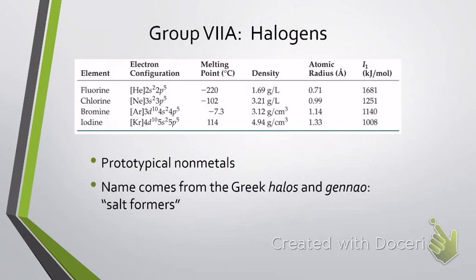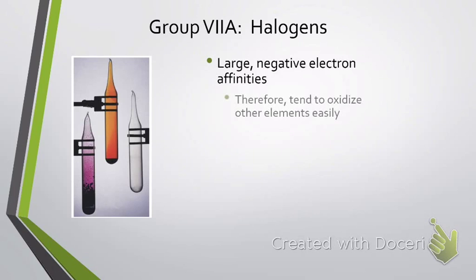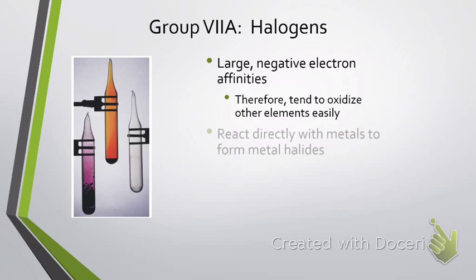The name 'halogens' comes from the Greek meaning 'salt formers,' because whenever they form an ionic bond between a metal and a halogen, those are known as salts — like sodium chloride. They also have very large negative electron affinities, so they tend to oxidize other elements easily because they want to take electrons to look like noble gases. They react directly with metals to form metal halides, usually called salts.